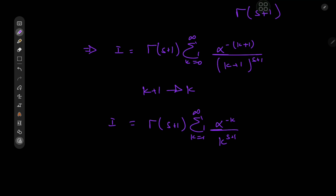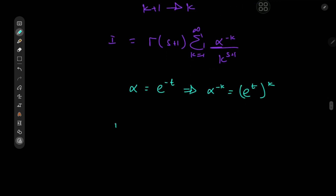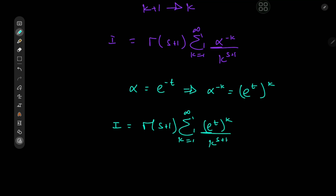This implies that the target integral i equals — notice that gamma(s plus 1) is independent of the index variable — so we can write this as a multiple to the sum over k from zero to infinity of alpha to the negative (k plus 1) divided by (k plus 1) to the s plus 1. And I'd like to perform a transformation of the index variable by shifting it from k plus 1 to k. That way, we have i equal to gamma(s plus 1) times the sum over the positive integers k of alpha to the negative k divided by k to the s plus 1. Recall that alpha equals e to the negative t, which implies that alpha to the negative k equals e to the t to the k. So now we have i equal to gamma(s plus 1) times the sum over k of e to the t to the k divided by k to the s plus 1.